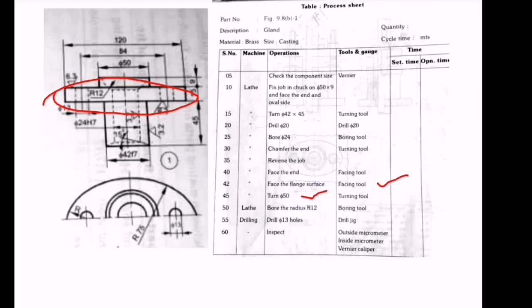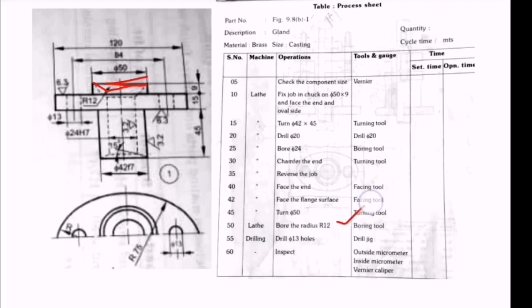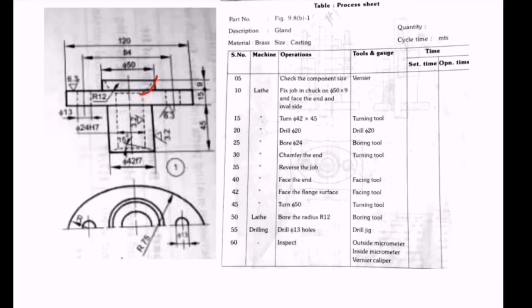After that, turning the 50 diameter - we turn this 50 diameter. Then bore the radius of 12. Inside this we have a radius of 12, so we bore this radius.